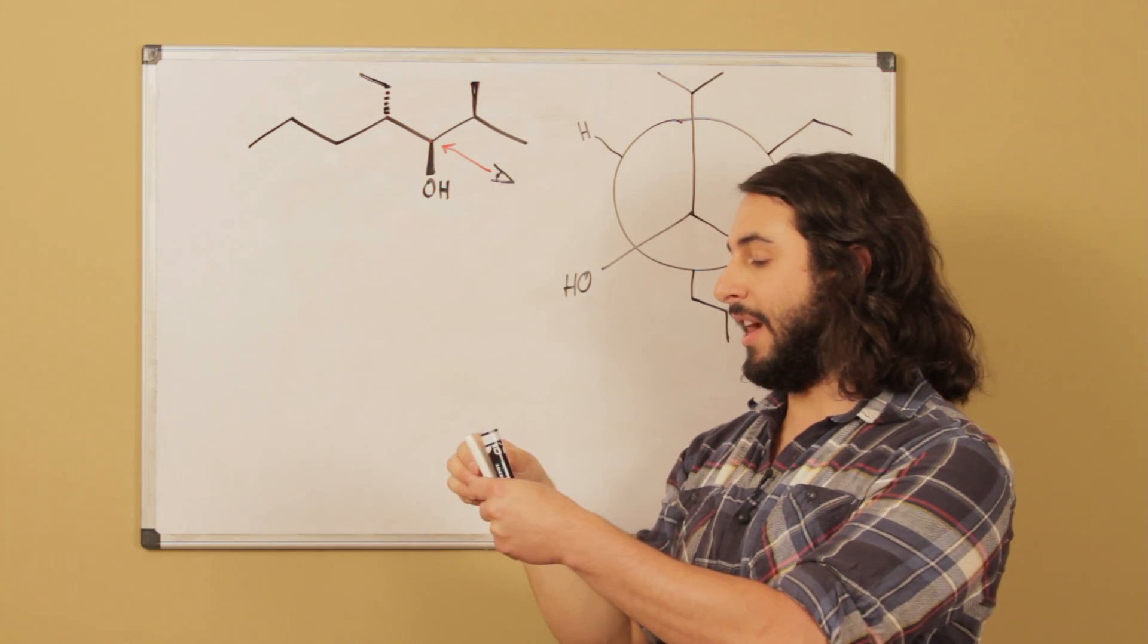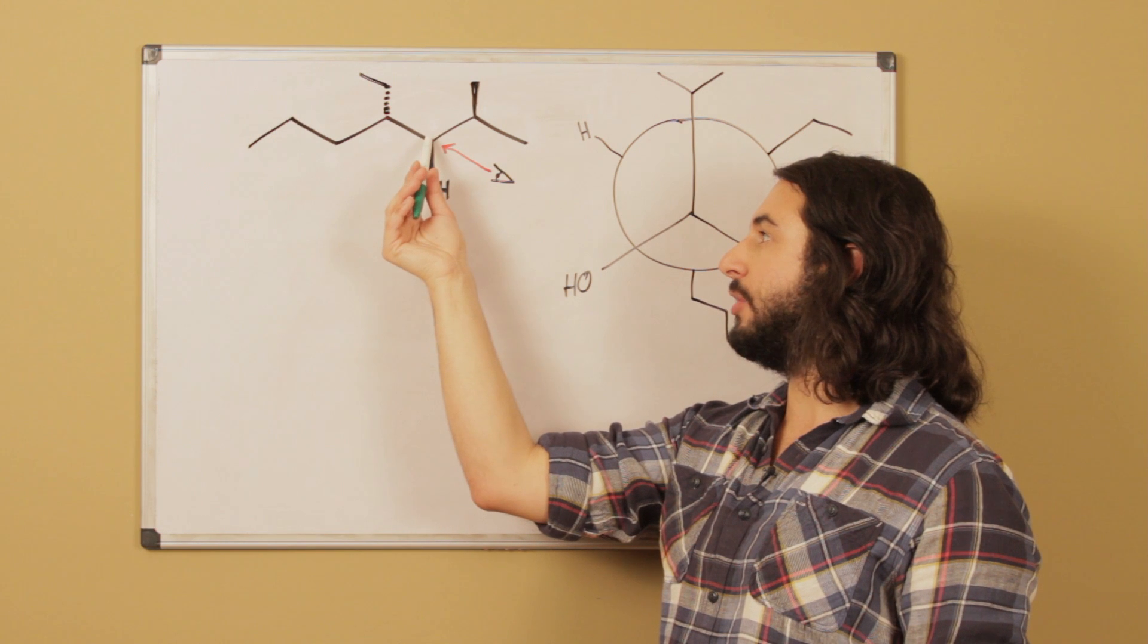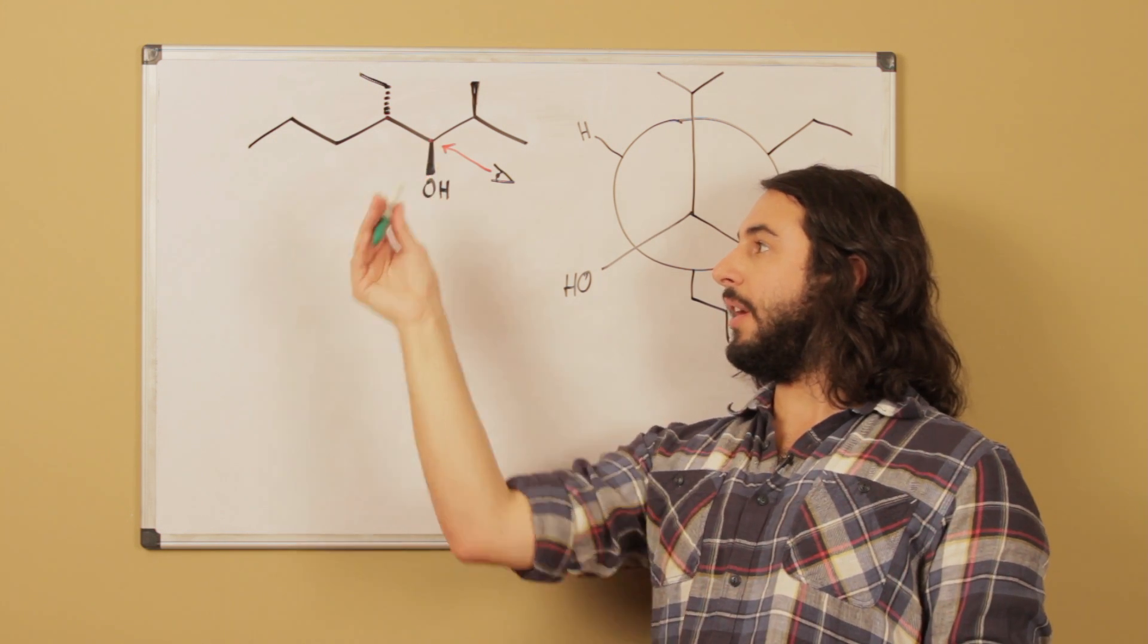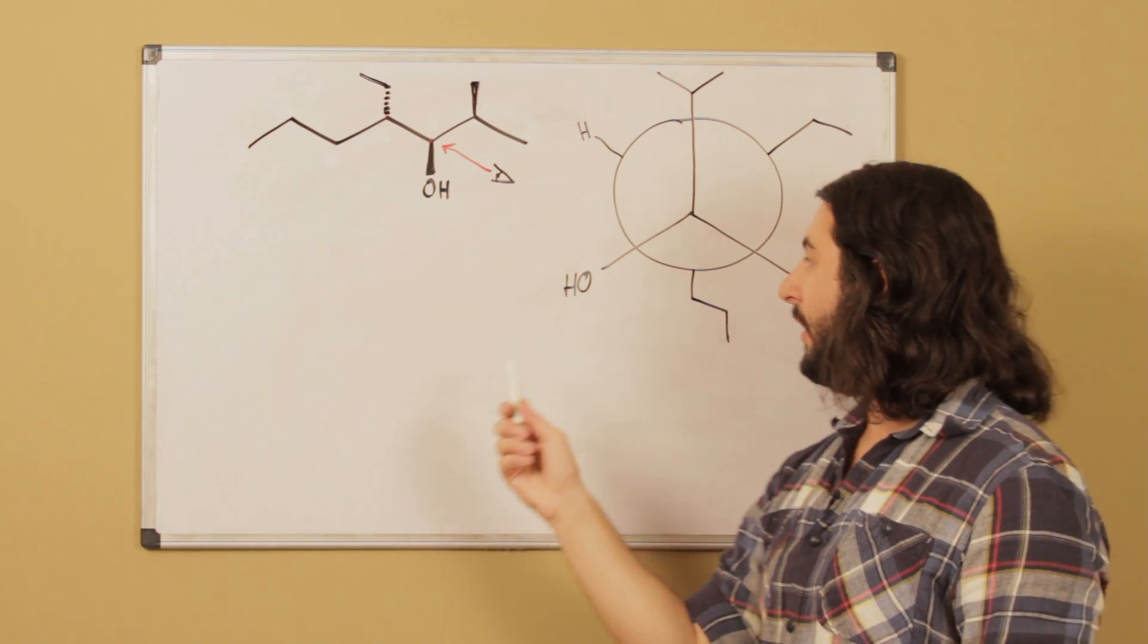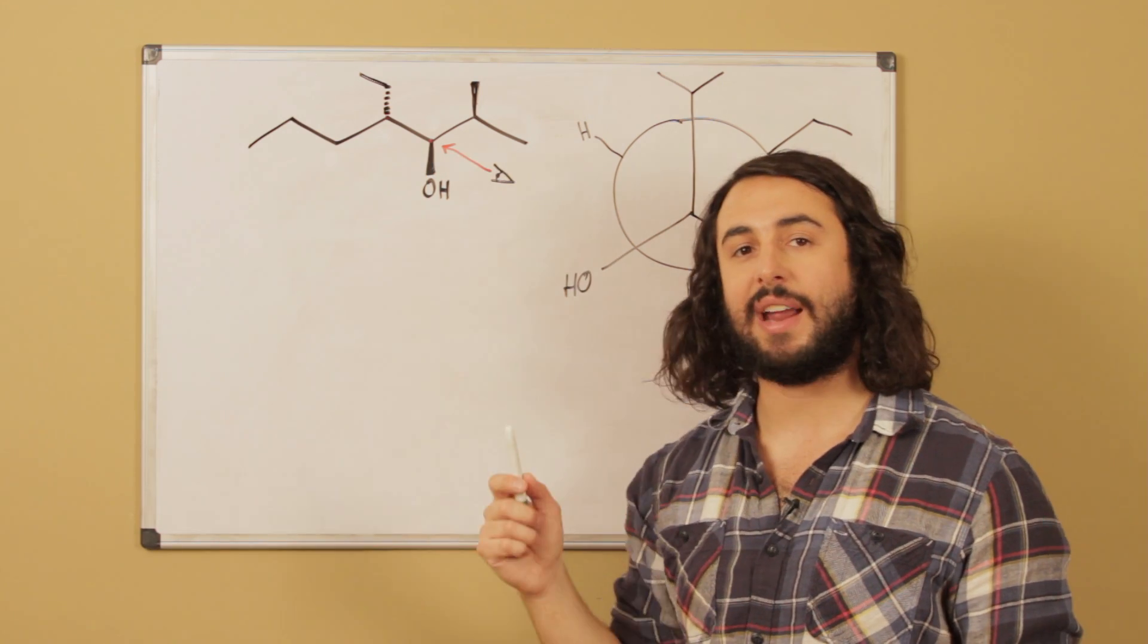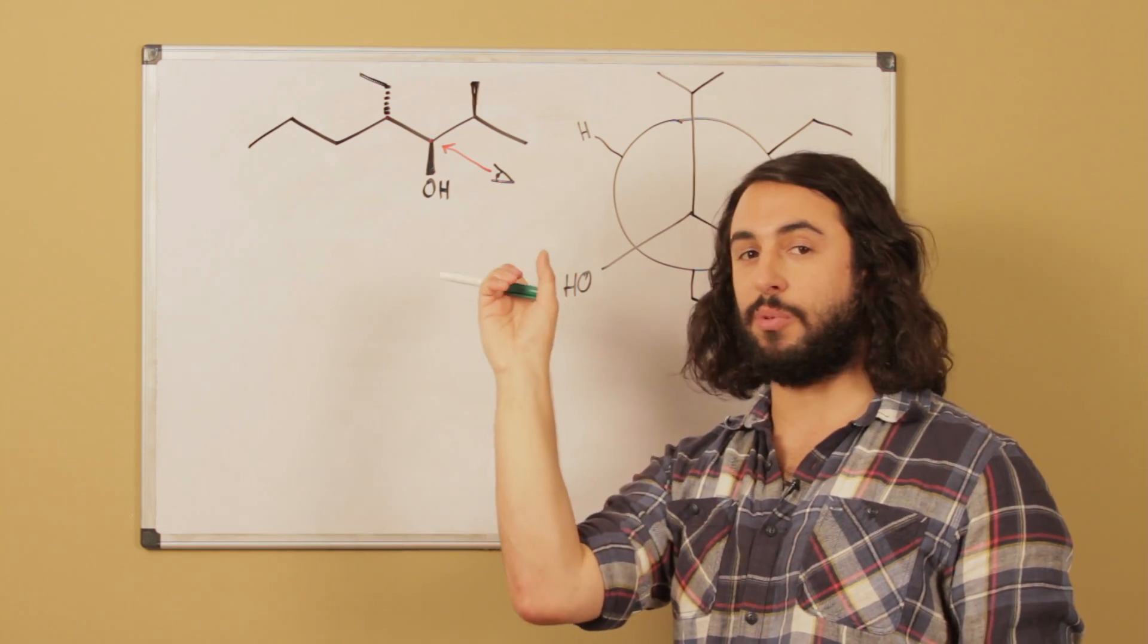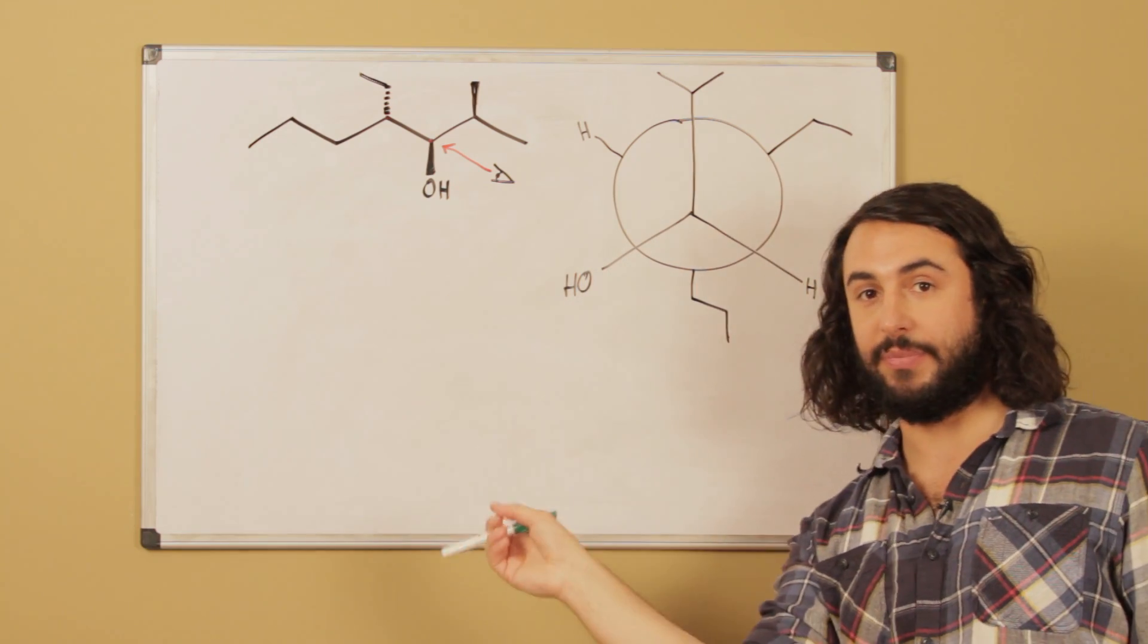And then this hydroxyl group, that's on the wedge bond, that's out here, that's sticking out like that. So if I'm in the board, I see that down to my left. So that's down to my left. And then the implied hydrogen, which would be on the dash bond, that's this way, that's past the board, so that's down and to my right, this way.